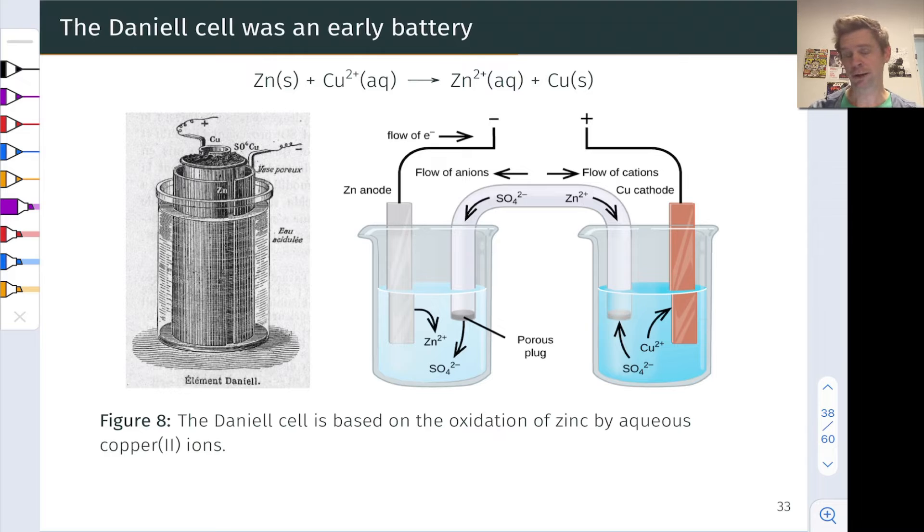The Daniell cell was one of the first reported batteries, first publicly reported batteries, and this was way way back. This image that you see on the left is from the early 20th century, 1904. So the Daniell cell goes way way back and it's based on a very simple redox process, the oxidation of zinc metal by copper 2+ to form zinc 2+ and copper metal.